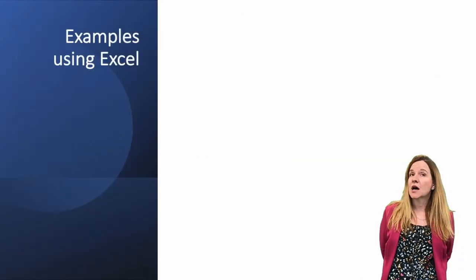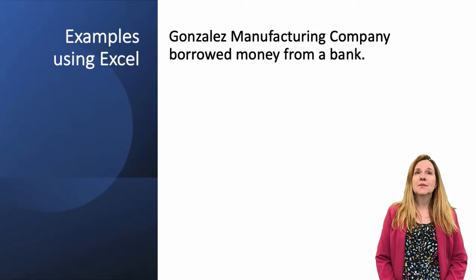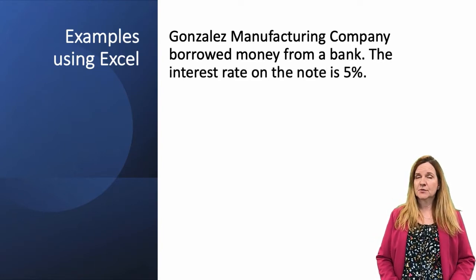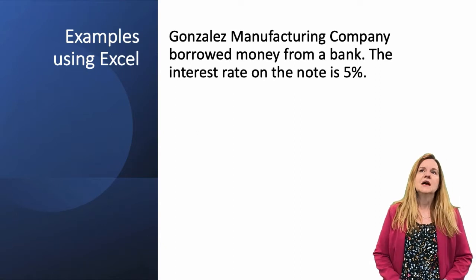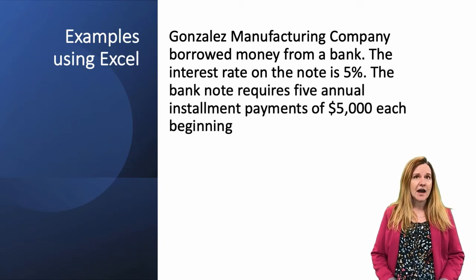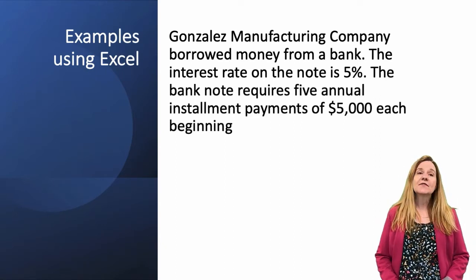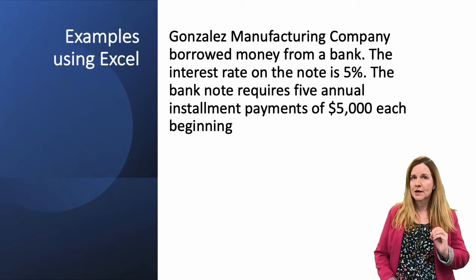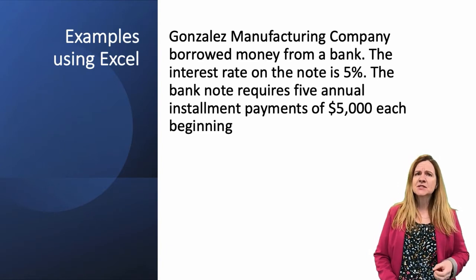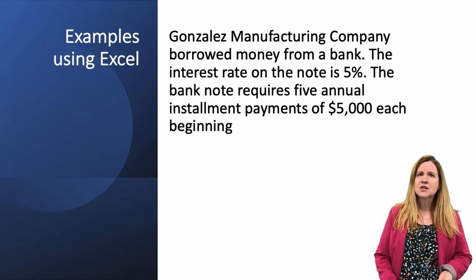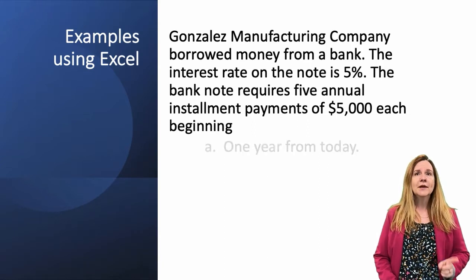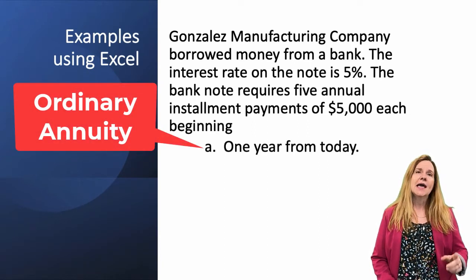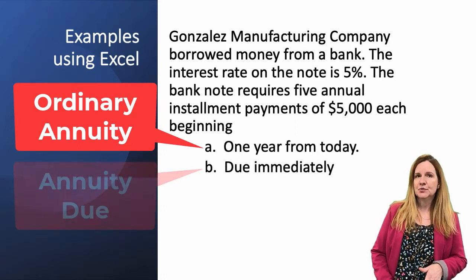Let's look at an example of an annuity. Gonzalez Manufacturing Company borrowed money from a bank. The interest rate on the note is 5% — we call it a note when it's a loan. The bank note requires five annual installment payments, so we have five payments this time. That's why this is an annuity — it's not just one amount, it's going to happen five times. The payments are $5,000 each, beginning one year from today for the ordinary annuity, or due immediately for the annuity due.